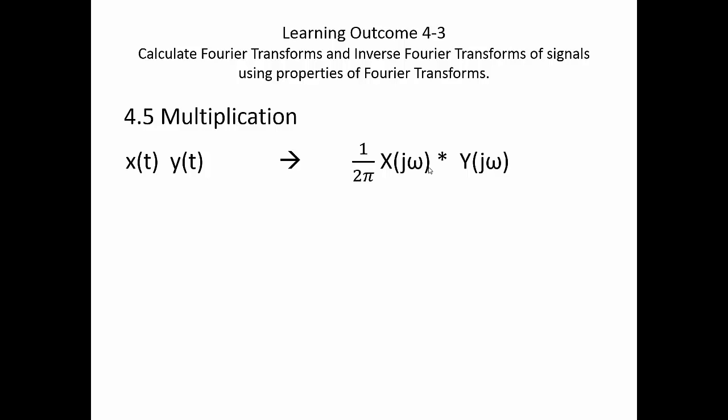Likewise, multiplication. We use this a lot in chapter 8. If we have a signal x of t multiplied in time by a signal y of t, the Fourier transform of that product would be 1 over 2 pi, x of j omega convolve y of j omega. This 1 over 2 pi is important. Multiplication in time is 1 over 2 pi, convolution in frequency.